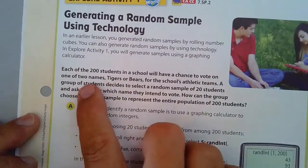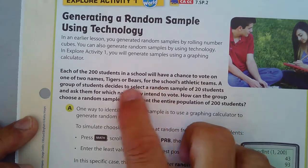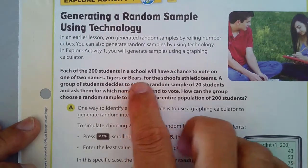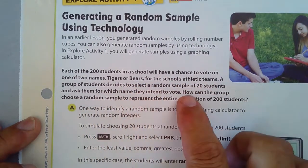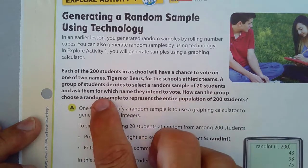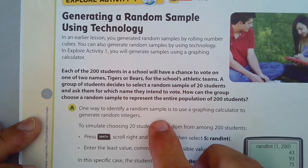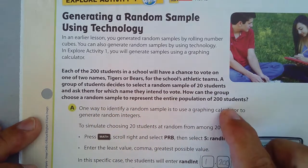In the situation, each of the 200 students in a school will have a chance to vote on one of two names, Tigers or Bears, for the school's athletic teams. A group of students decides to select a random sample of 20 students and ask them for which name they intend to vote.